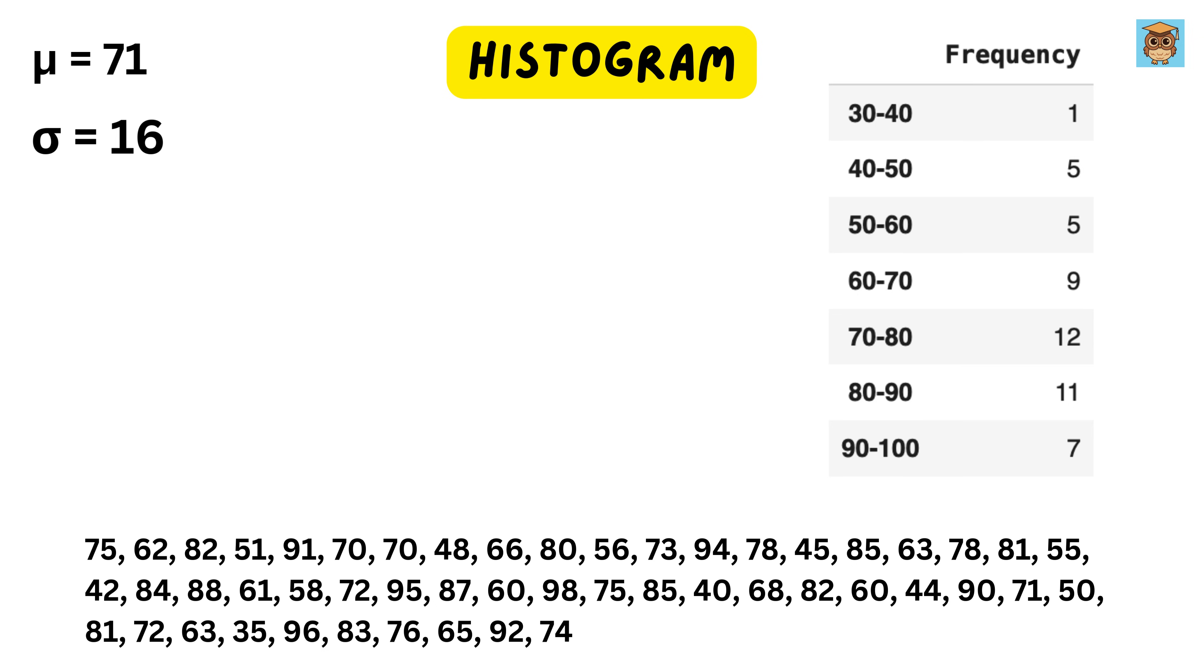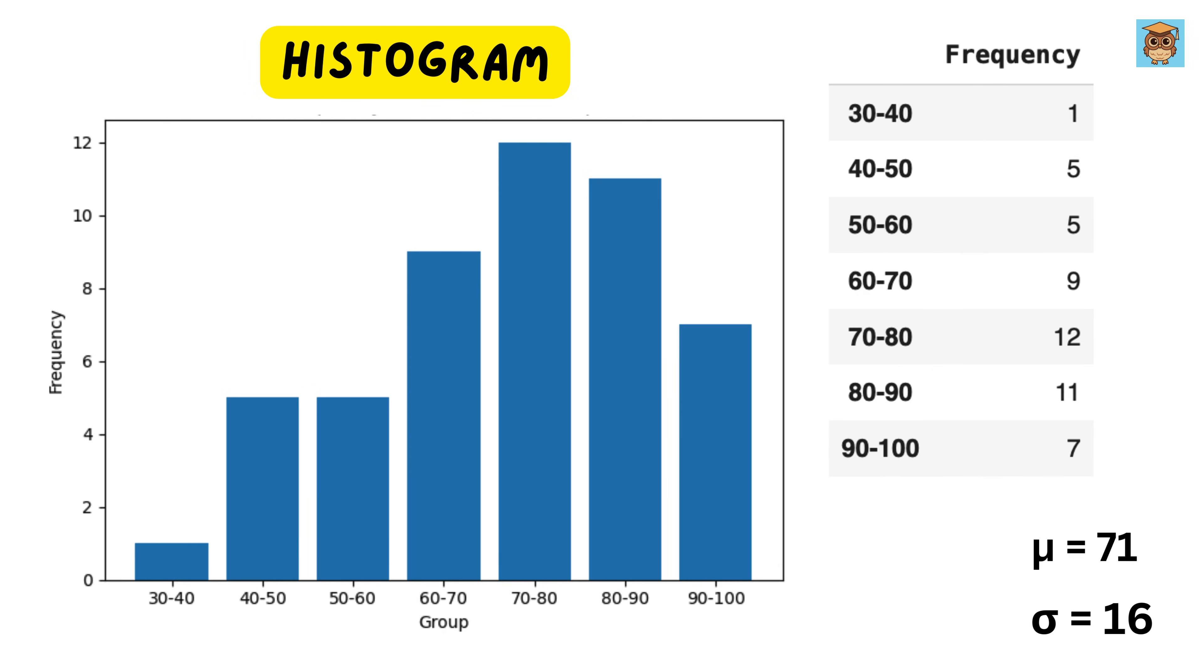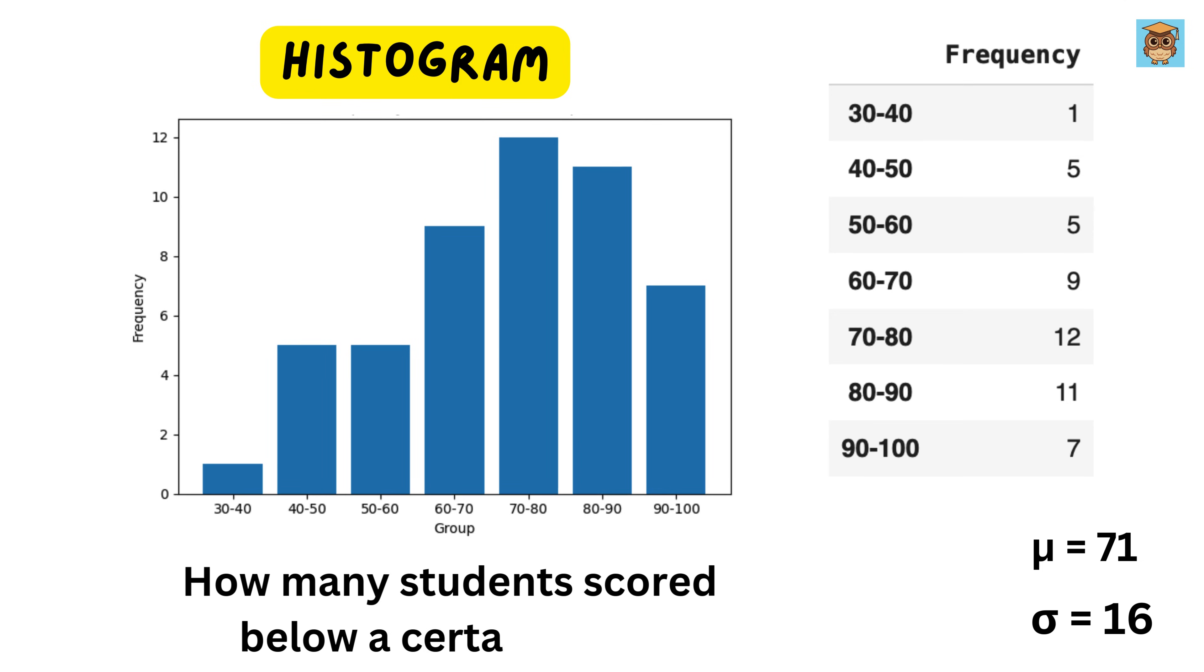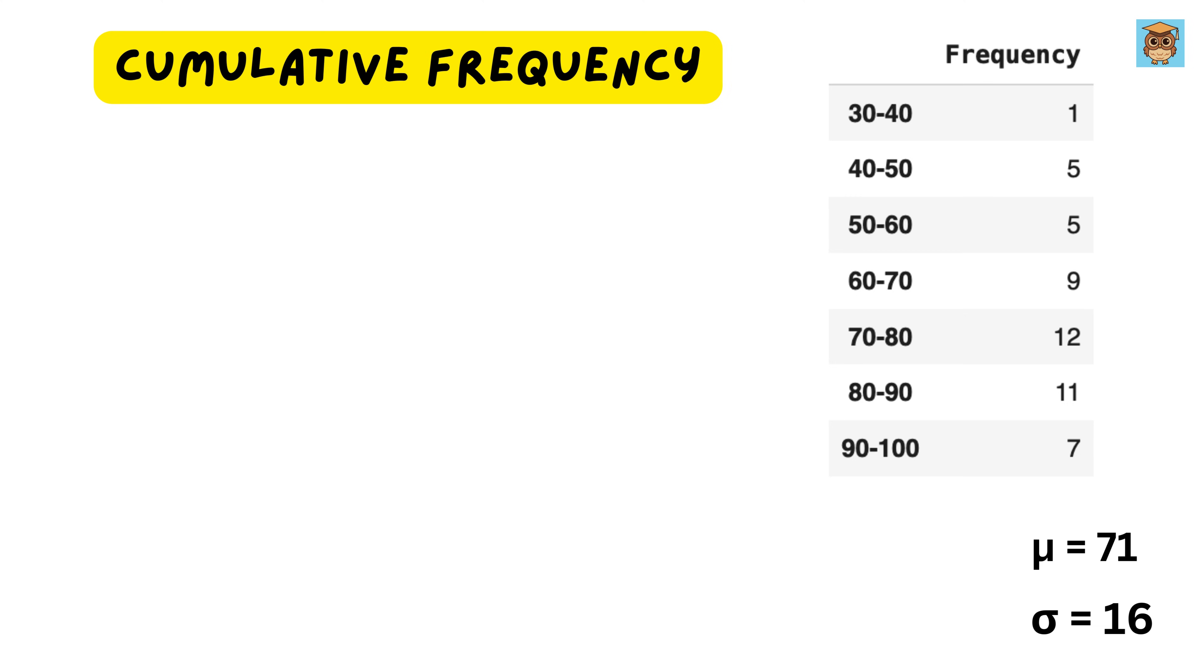If we draw this as a bar chart, we will see a pattern. The middle range, 70 to 80, has the highest number of students, while fewer students scored very low or very high. Now that we have grouped the marks into ranges and visualized them in a histogram, we can go one step further and ask, how many students scored below a certain mark? This is where cumulative frequency comes in.